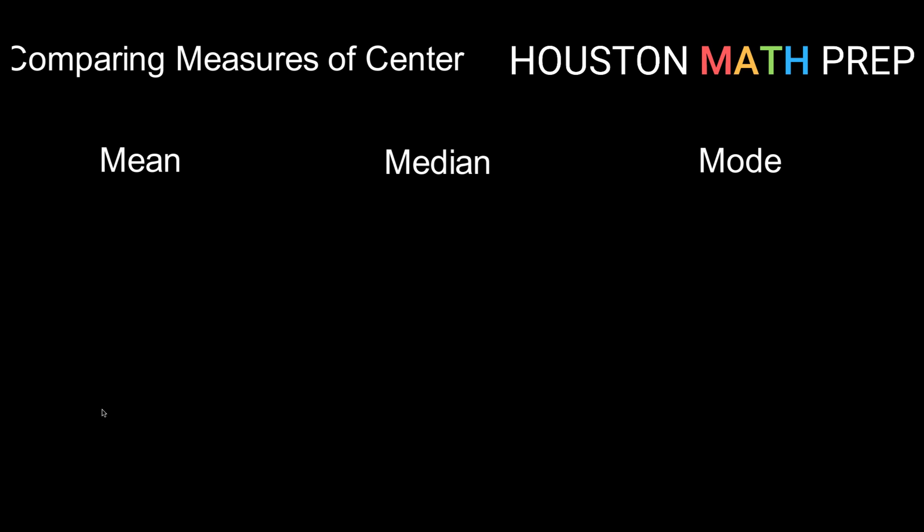We're going to start with the mean, the average, and talk about what's good about it and what are some potential drawbacks. Good things about it are that it uses every data value. We call measures of center or measures of spread or position—all these statistics that we can calculate that use every data value—we call those reliable. So the mean is a reliable statistic because it uses all data values in its calculation.